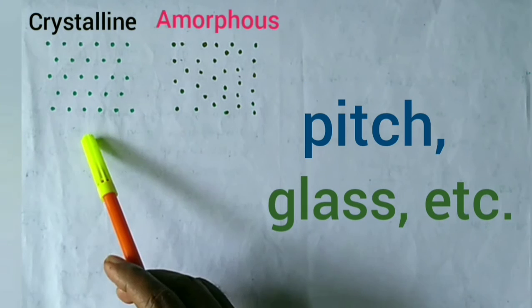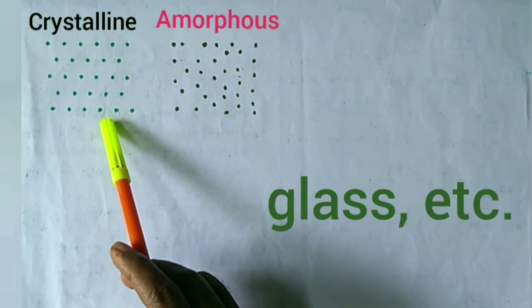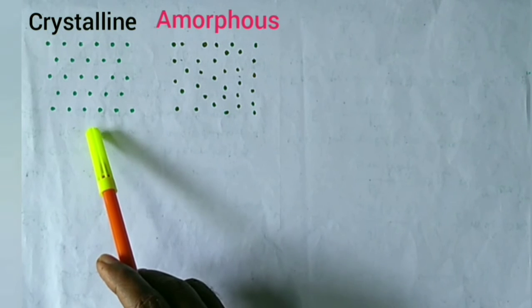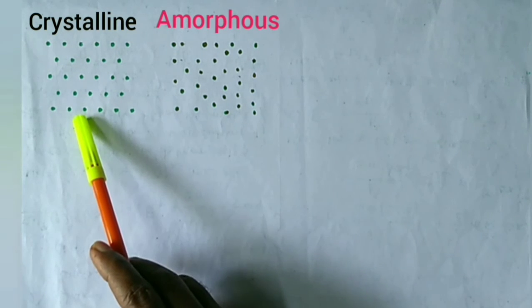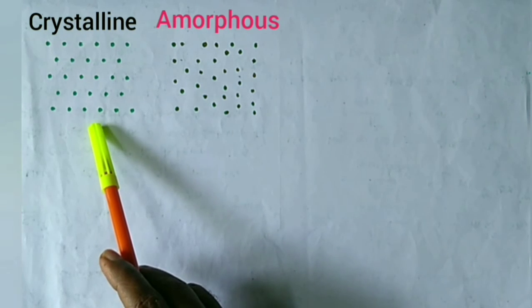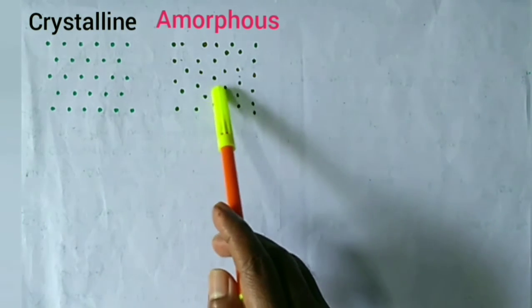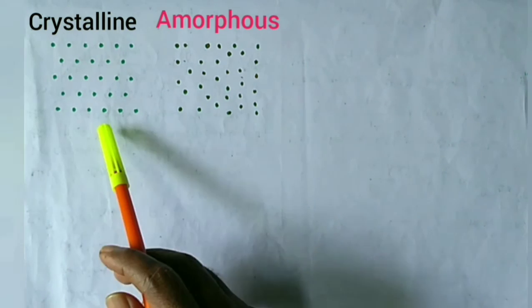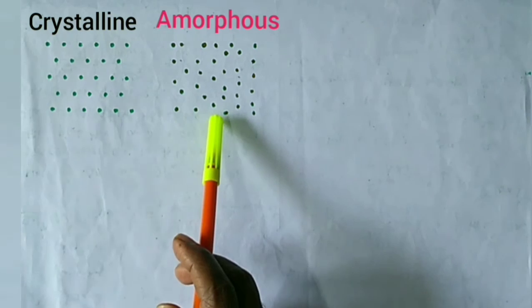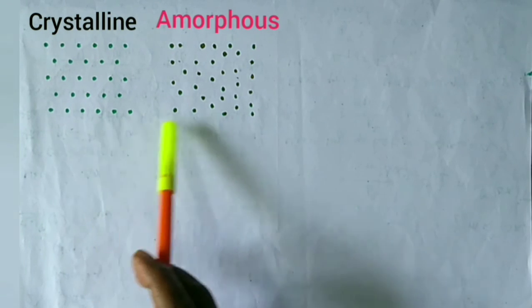Because of the regularity in arrangement of atoms, molecules, or group of atoms in crystal, it is easy to explain the various properties of crystalline solid than those of amorphous solid. Actually, we get three-dimensional solids in nature, but for simplicity, we present here two-dimensional figures.